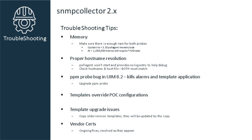Memory issues would be the first area to investigate. Many times the default value is not enough to handle a larger number of metrics. Remember, the more devices or the more metrics that are put on the bus, the more memory will be required. And this memory is spread out across two probes, both the SNMP Collector and Poll Agent.